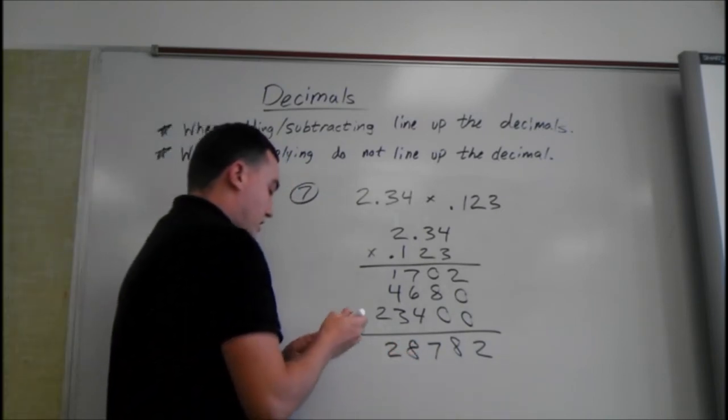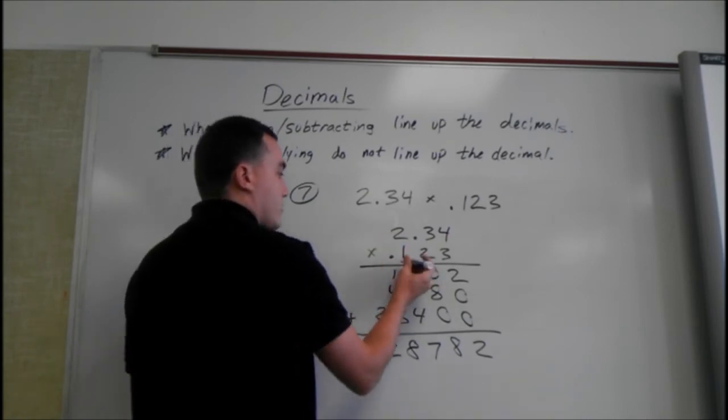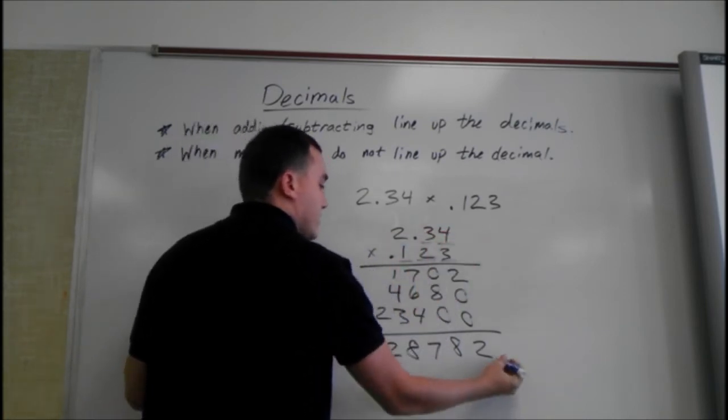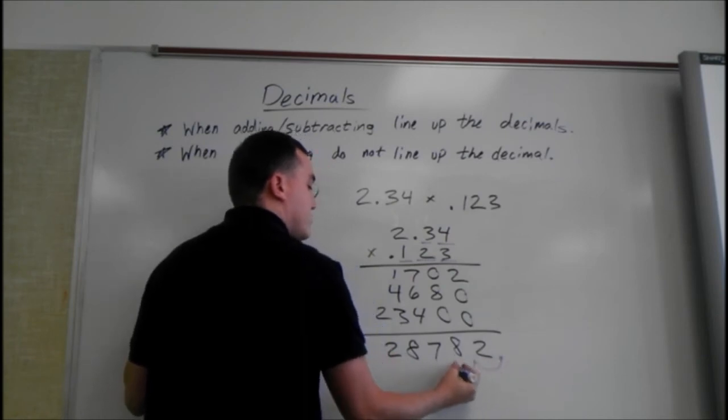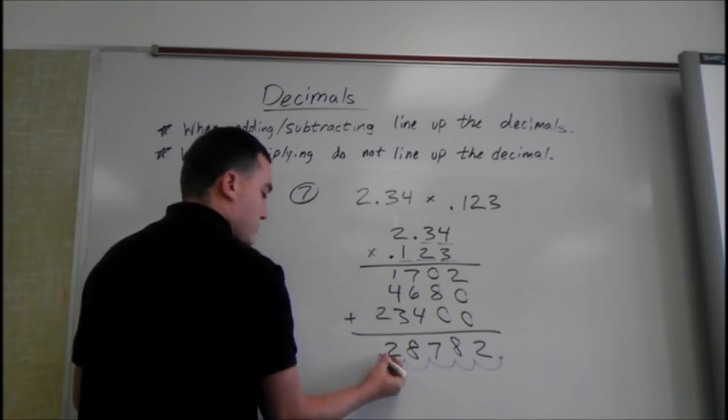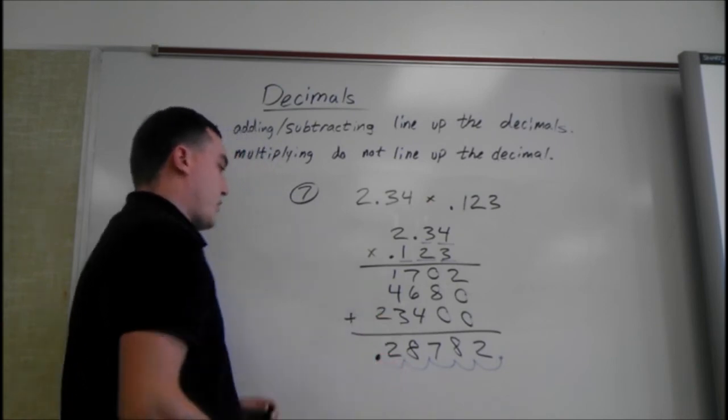To figure out how many decimal places you have to use, just count them up here. We have 1, 2, 3, 4, 5. So 1, 2, 3, 4, 5. Our answer is going to be 0.28782.